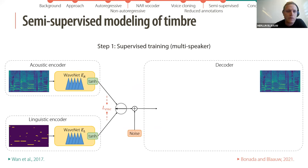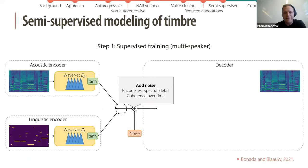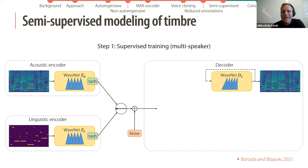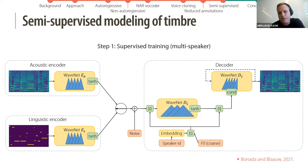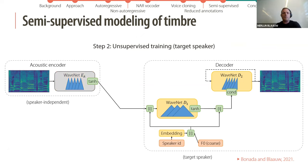We add some noise to the codes to encode less spectral detail and improve coherence over time. The decoder has an autoregressive WaveNet, very similar to our initial autoregressive model, and another non-causal WaveNet with a large receptive field that integrates information over time such as phonetic context. The decoder is conditioned on speaker embedding and F0. The second step is supervised training of the target speaker: we take the pre-trained acoustic encoder and train only the decoder on the target speaker data.